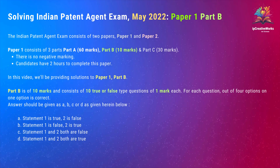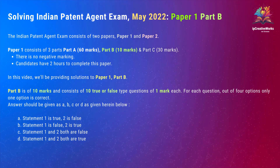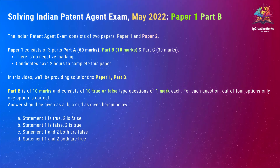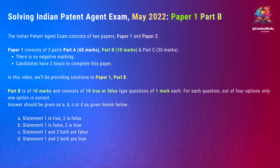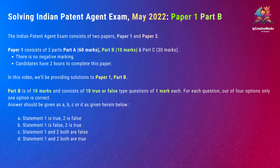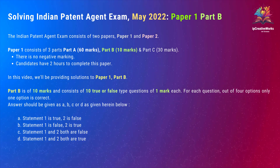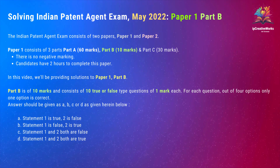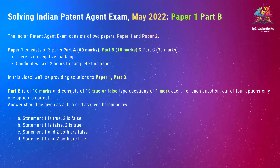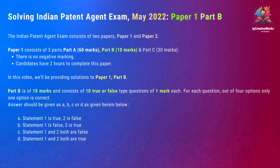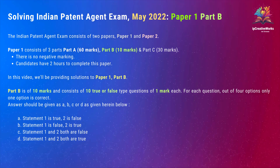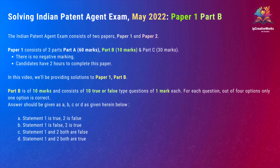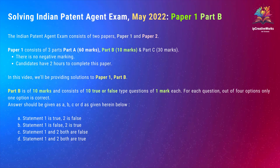The Indian Patent Agent Exam consists of two papers: Paper 1 and Paper 2. Paper 1 consists of three parts — Part A (60 marks), Part B (10 marks), and Part C (30 marks). There is no negative marking. Candidates have two hours to complete this paper. In this video, we'll be providing solutions to Paper 1, Part B.